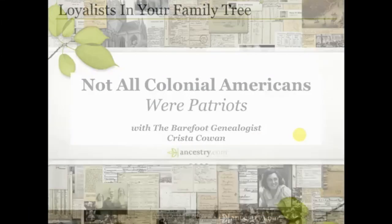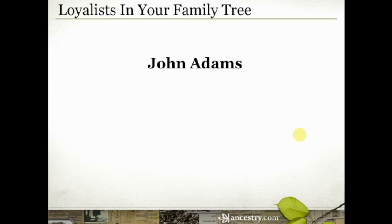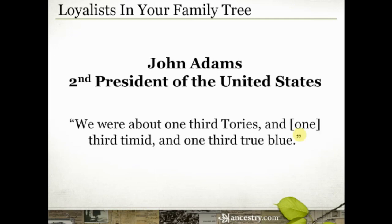We're going to start with a quote from the second president of the United States. Right shortly after the revolution he said, 'We were about one-third Tories and one-third timid and one-third true blue.' I think that's really interesting that he identified the population that way. That one-third timid, of course, meaning those fence sitters or those people who did not choose a side either way.